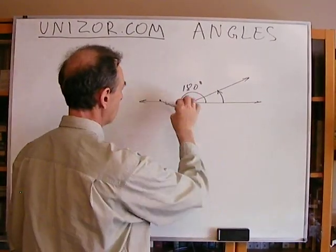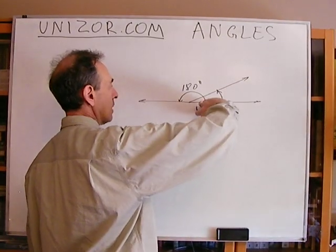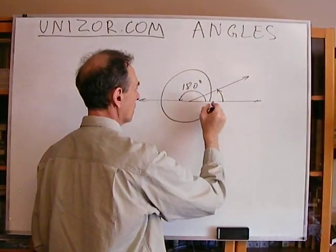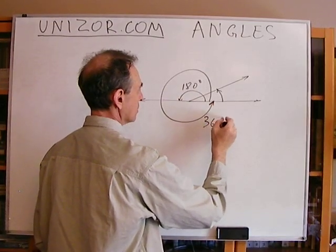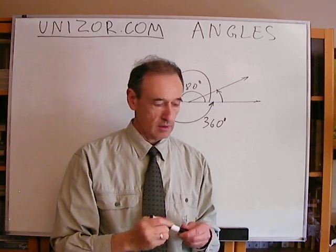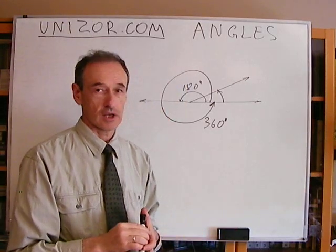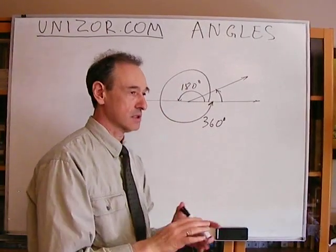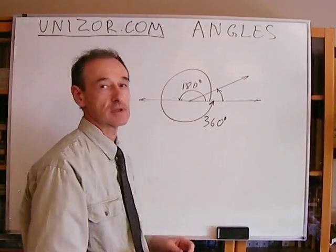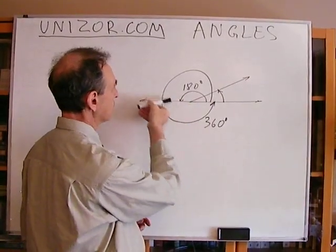And whenever we go further, another 180 degrees, the full angle is 360 degrees. This is by definition. You don't have to have any kind of explanation. We just decided that the entire full angle is 360 degrees, and half of it is 180.